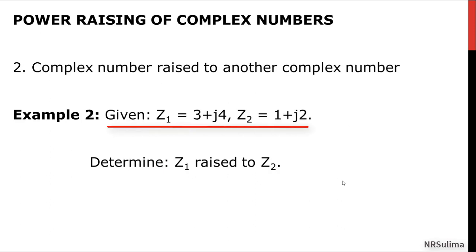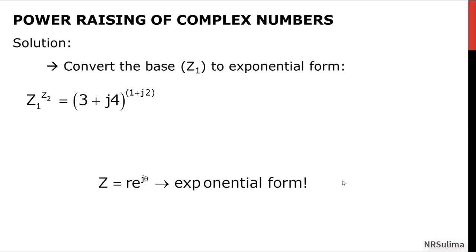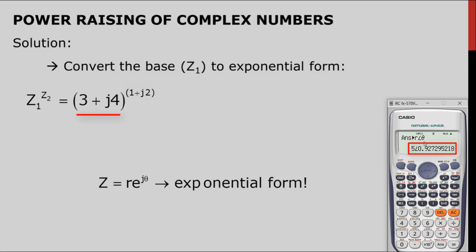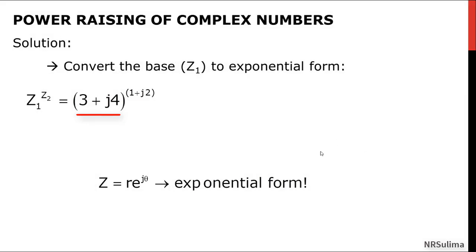Next example: given z1 equal to 3 plus j4 and z2 equal to 1 plus j2, determine z1 raised to z2. For step 1, convert the base z1, which is 3 plus j4, to exponential form. Using the calculator in radian mode, convert 3 plus 4i to polar form, shift to 3. The answer is 5 angle 0.9273, where r equals 5 and theta in radians equals 0.9273. So we write 3 plus j4 in exponential form as 5 exponential j 0.9273.